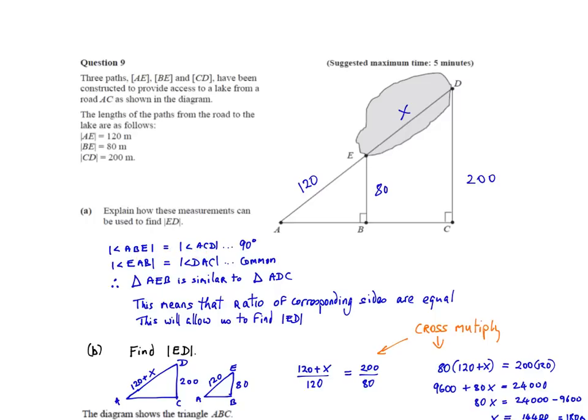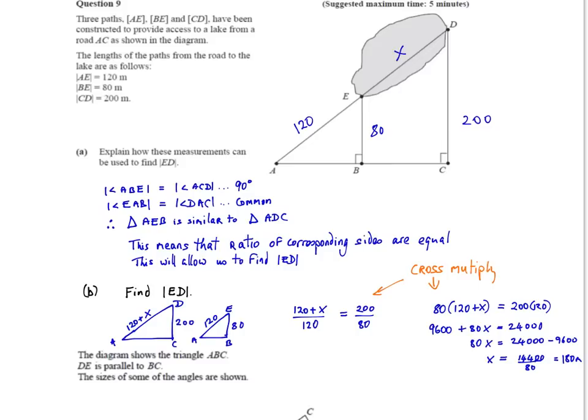So we just need to prove that they are similar. So we'll start off by saying that the angle ABE is equal to the angle ACD. So this angle is equal to this angle. That's given in the question. Also, the angle here is shared by both the larger triangle and the smaller triangle. So we can say angle EAB is equal to angle DAC, because it's common, shared. Once you've proven that two angles are equal, then the two triangles are automatically similar. So we can say, therefore, triangle AEB is similar to triangle ADC. And now that we know that they're similar, we can say that we can use the ratio of corresponding sides to allow us to find what ED is.